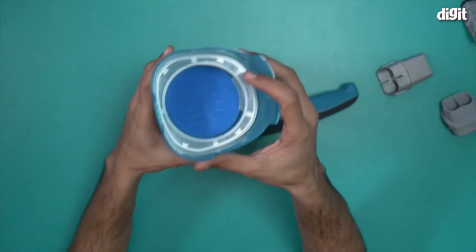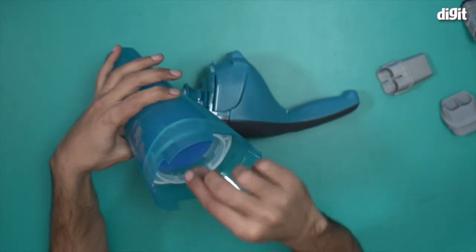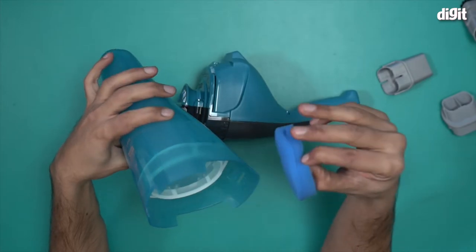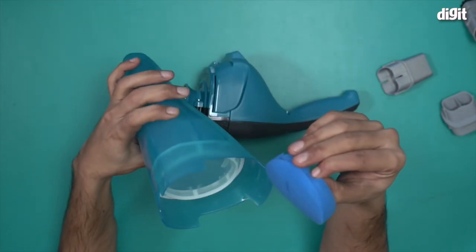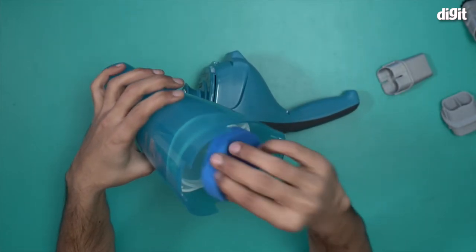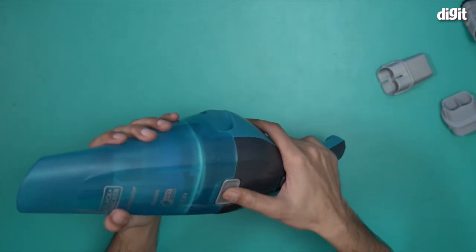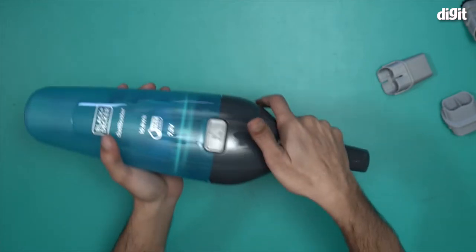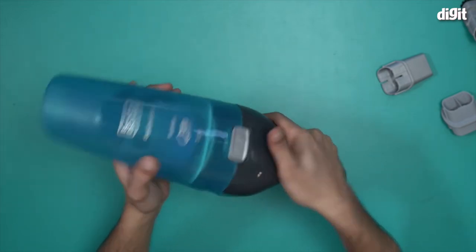There you go. This is where all the dust gets collected. This is basically a filter - all the dust gets collected over here. This is a bagless vacuum cleaner, as you can see. But the idea is that this is a portable vacuum cleaner.